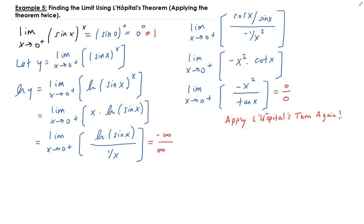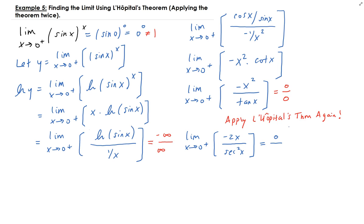Taking the limit by applying L'Hôpital's a second time: the derivative of the top, minus x squared, is minus 2x. The derivative of tangent x is secant squared x. Plugging in x = 0: the numerator gives 0, and secant 0 equals 1 over cosine 0, which is 1. So we get 0 over 1, which equals 0. However, remember this is not yet our final solution.